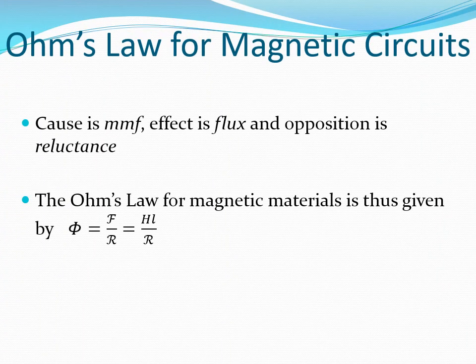Ohm's law for magnetic circuits. In magnetic circuits, the cause is MMF, the effect is flux, and the opposition is reluctance. Therefore, the Ohm's law for magnetic circuits can be expressed as: flux equals MMF over reluctance.